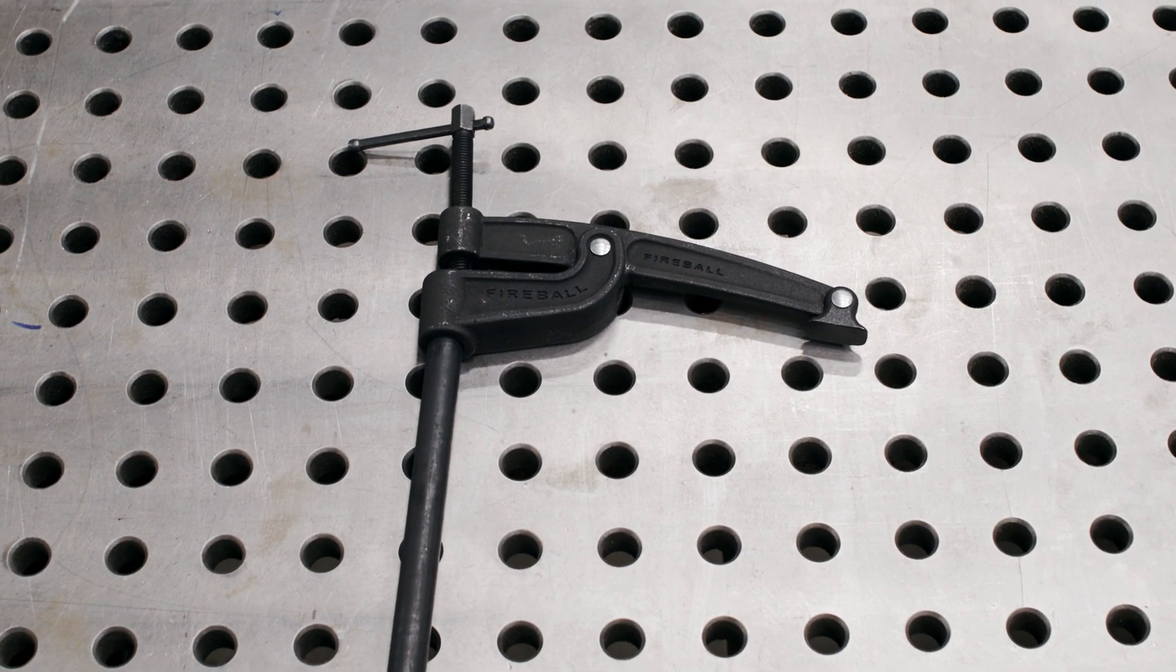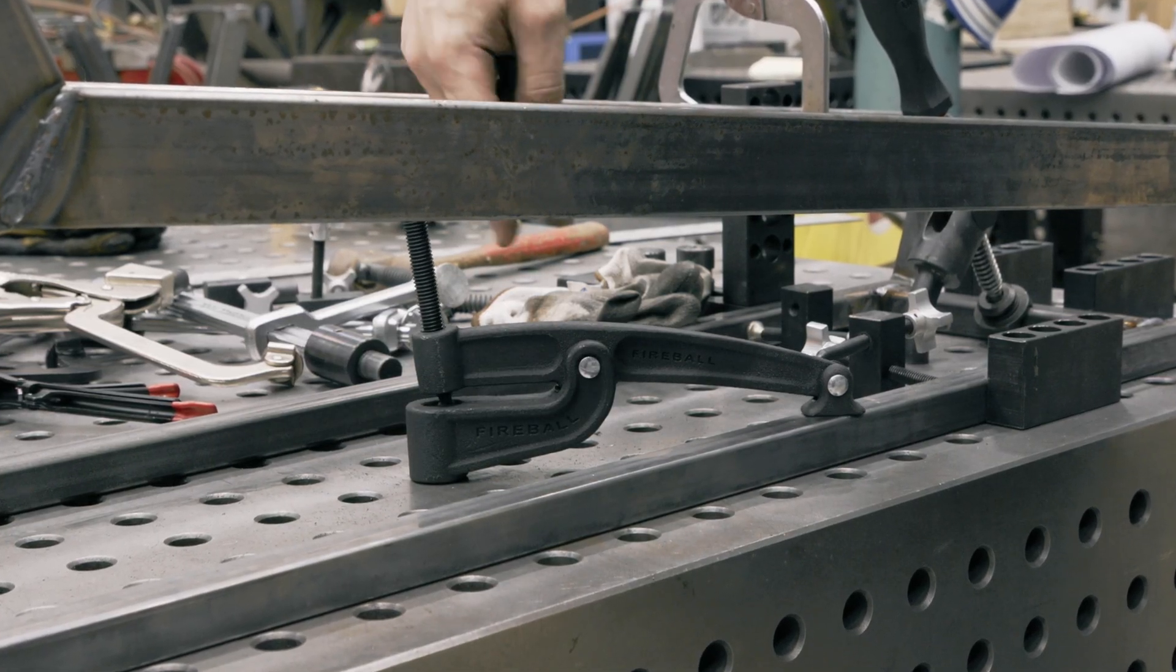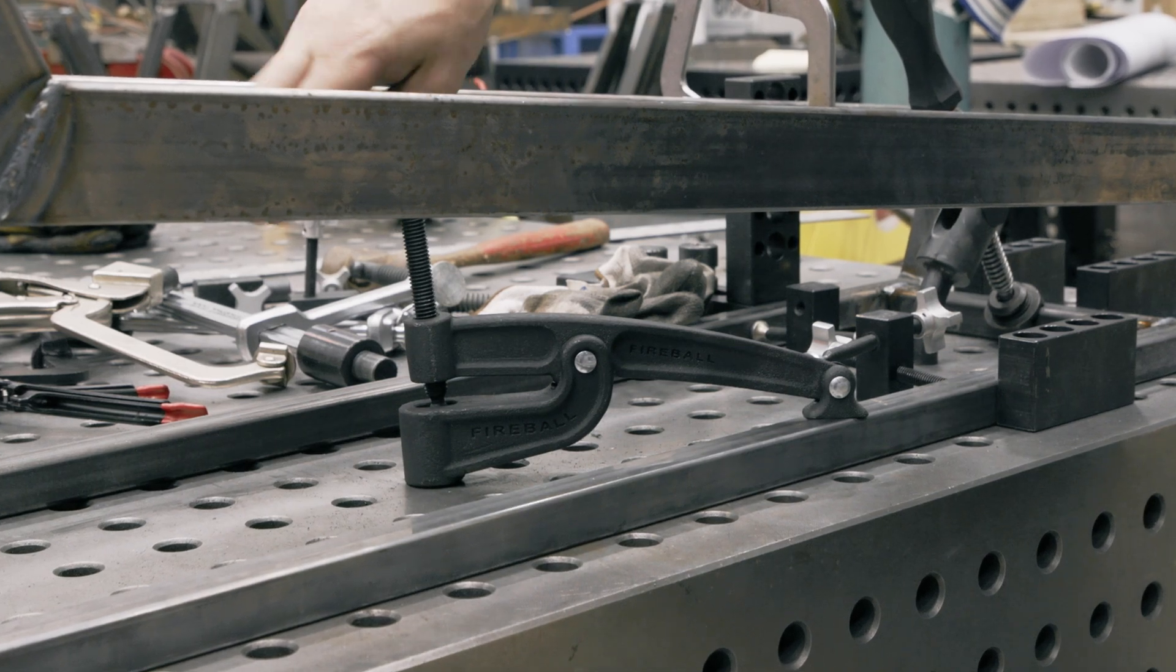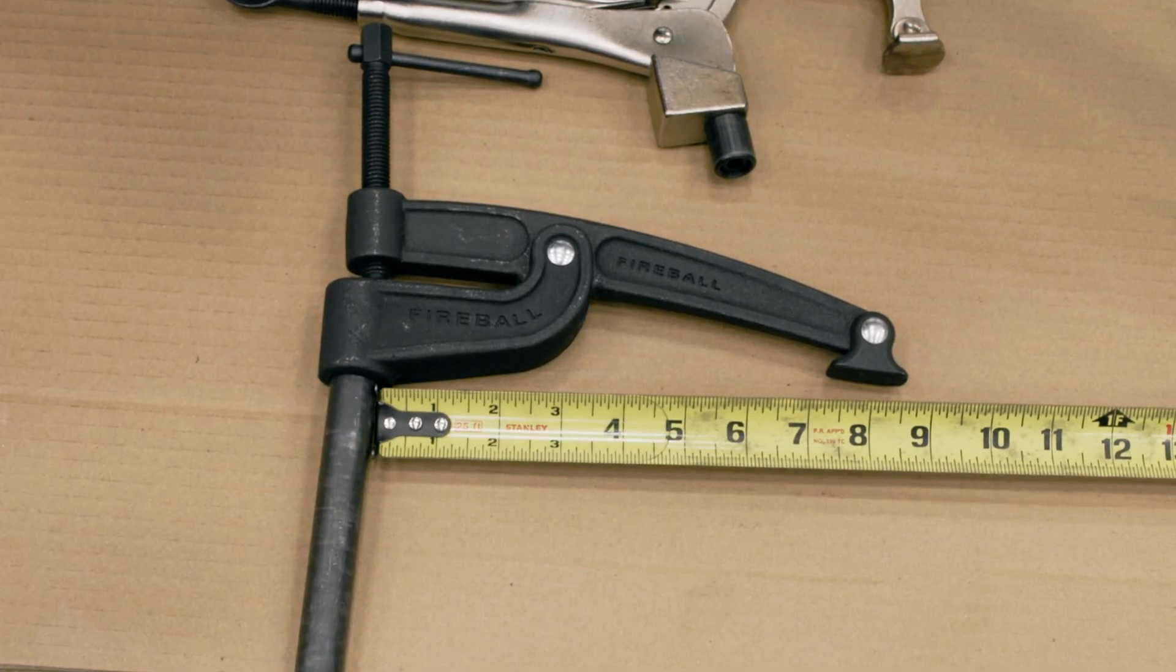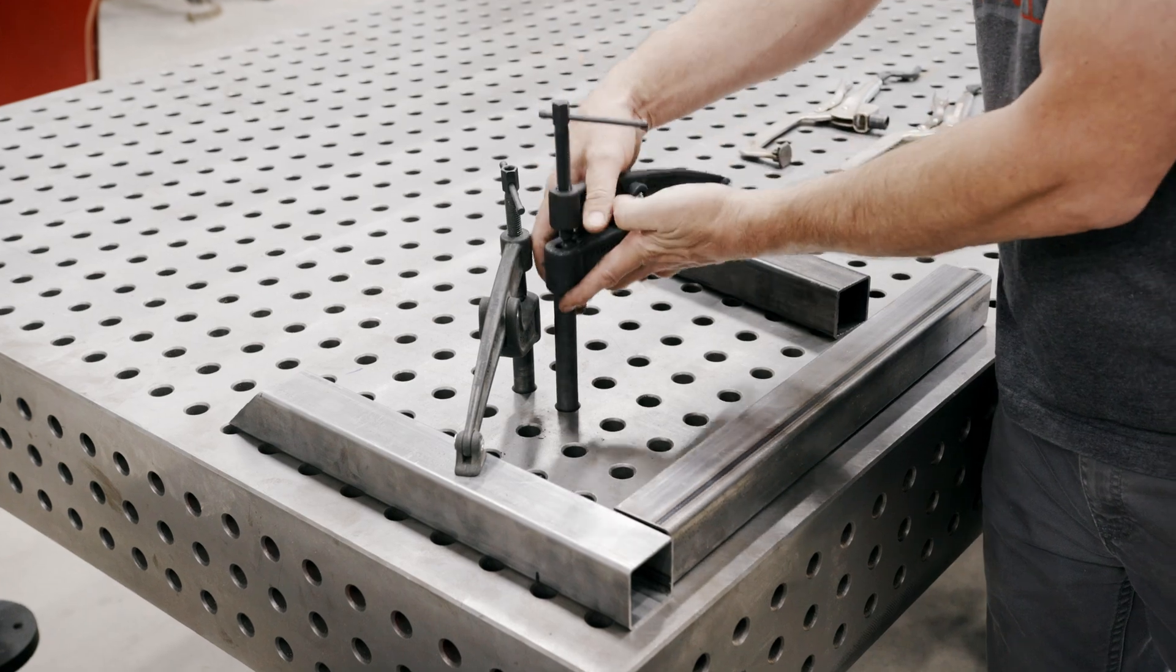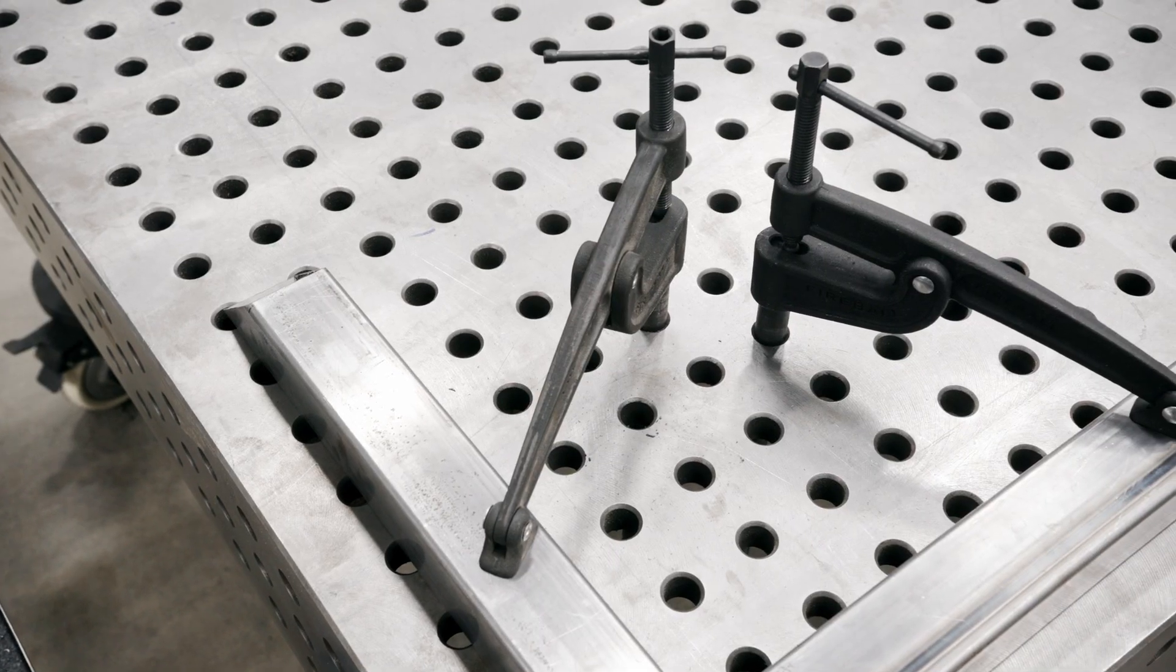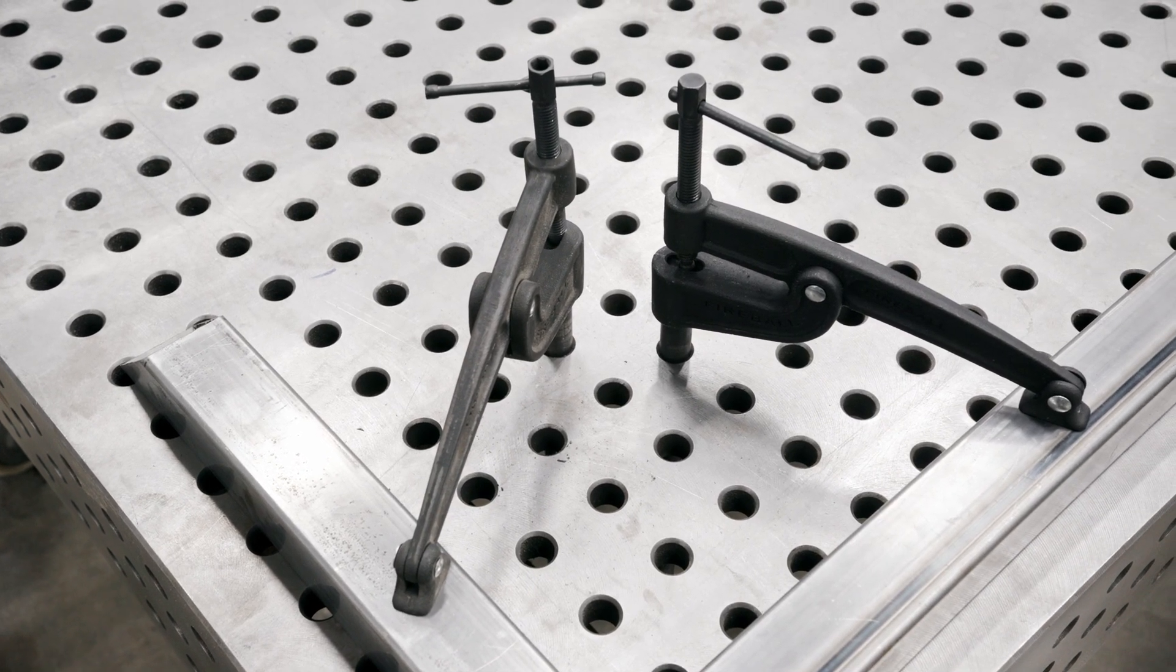The other option is a cantilever clamp. One of its benefits is that you have a screw and it's much shorter in length. There's an overall length of 9 inches while still having an 8 inch throat. The design of the cantilever clamp allows for back to back clamping, sharing adjacent holes.